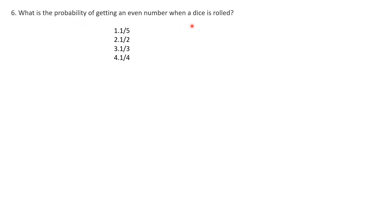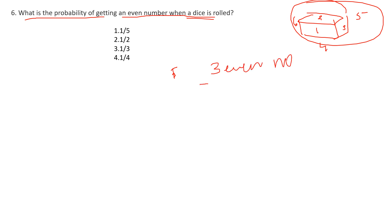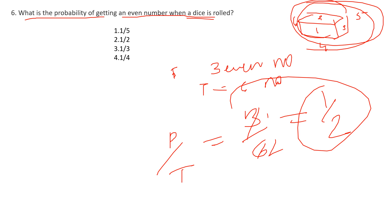Question six: what is the probability of getting an even number when a dice is rolled? A standard 6-sided dice has faces 1, 2, 3, 4, 5, 6. The even numbers are 2, 4, 6 — that is 3 even numbers. Total numbers are 6. So probability = 3/6 = 1/2. Therefore the probability of getting an even number when a dice is rolled is 1/2, which is option number 2.